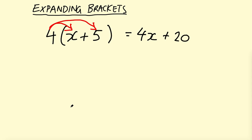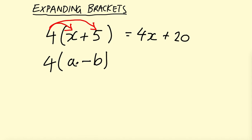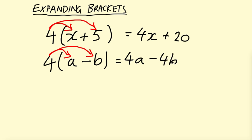You can have two unknowns — for example, 4 and then a bracket with A and a negative B, so 4(A minus B). To expand those you again multiply the 4 by everything: 4 times A gives 4A, and then 4 times negative B gives negative 4B.